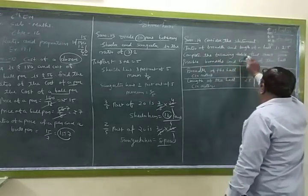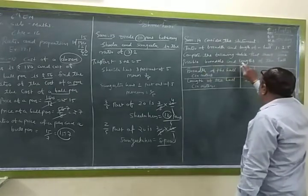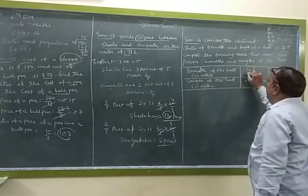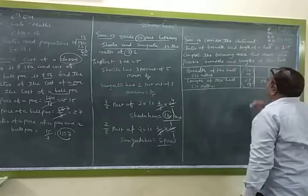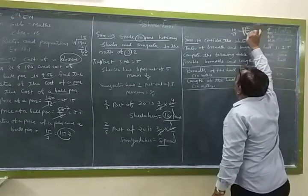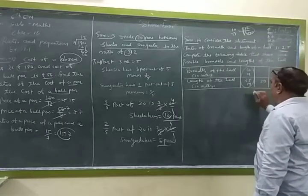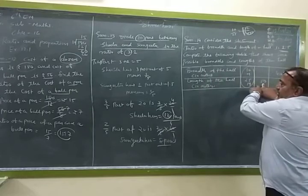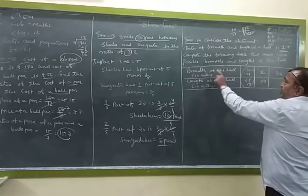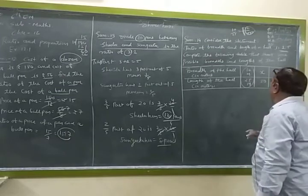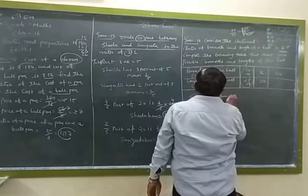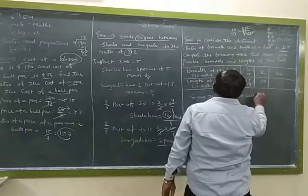So we have given here breadth of the hall in meters, 10 meters and length 25 meters. If we divide 10 upon 25, 5 twos are 10, 5 fives are 25, 2 upon 5. So we have given 2 to 5. Now, we have given in second box length of the hall in meters 50. So suppose we choose X as a breadth of the hall. Suppose the breadth of hall is X meter.